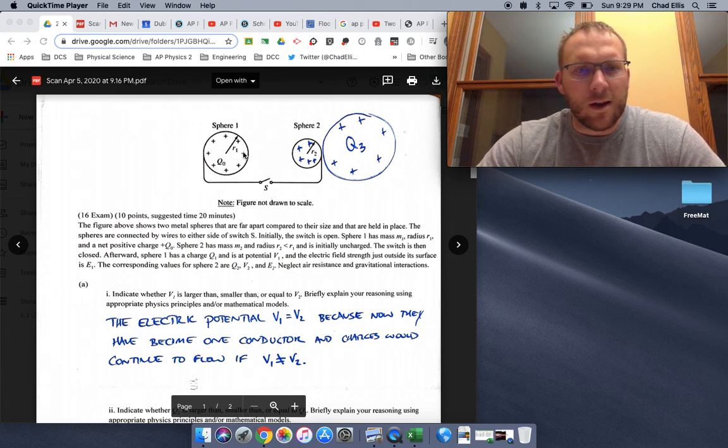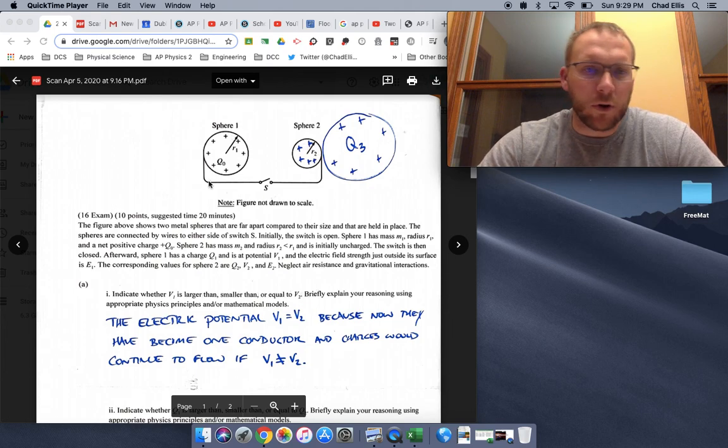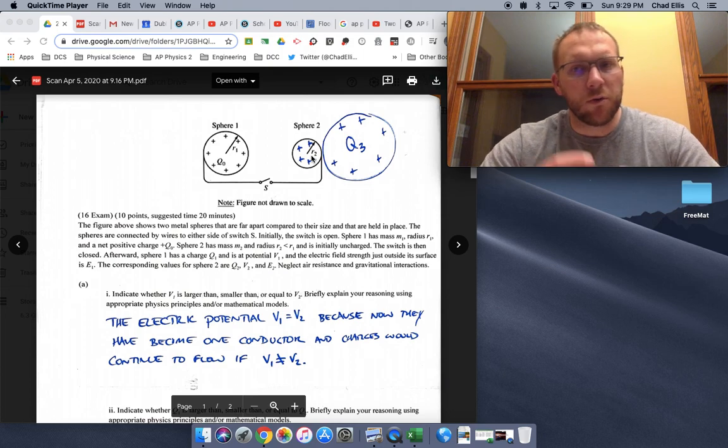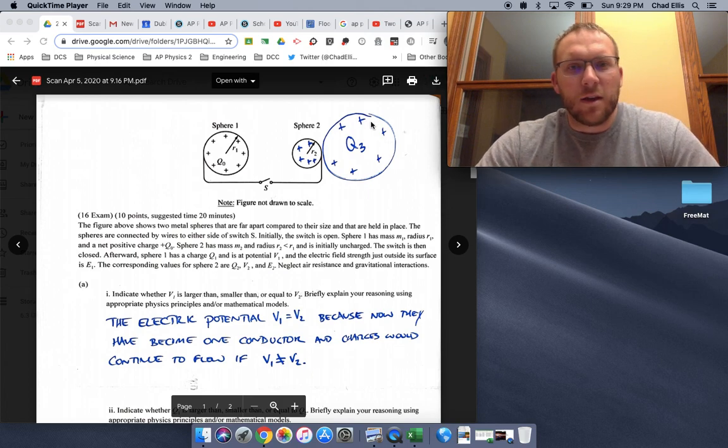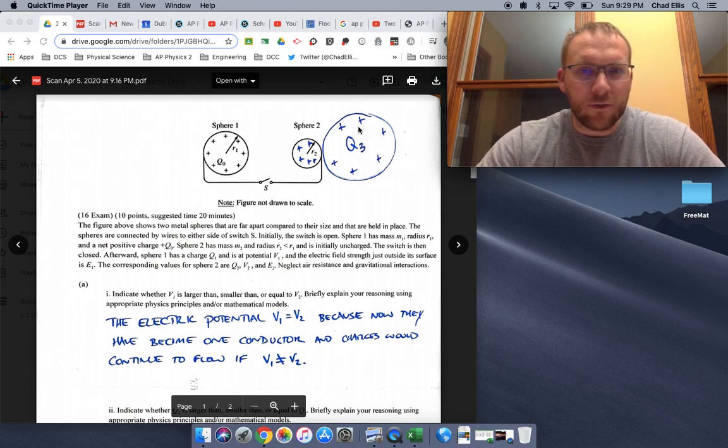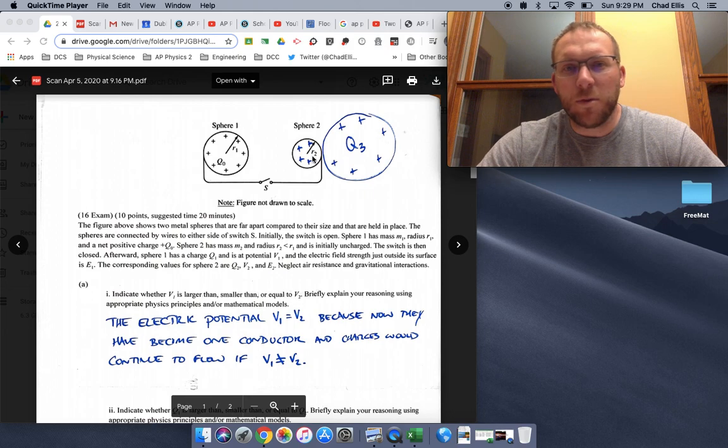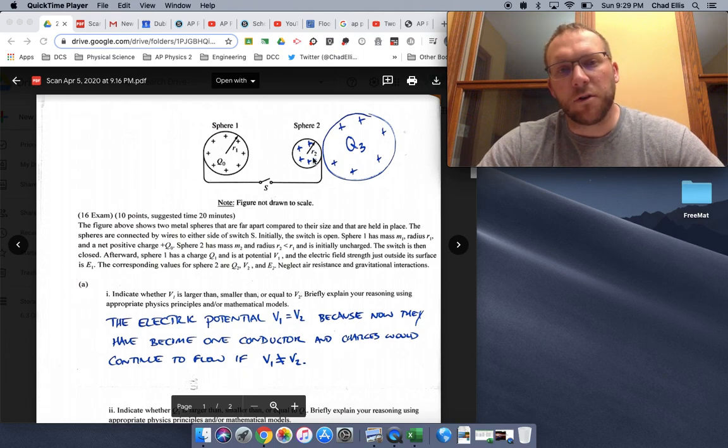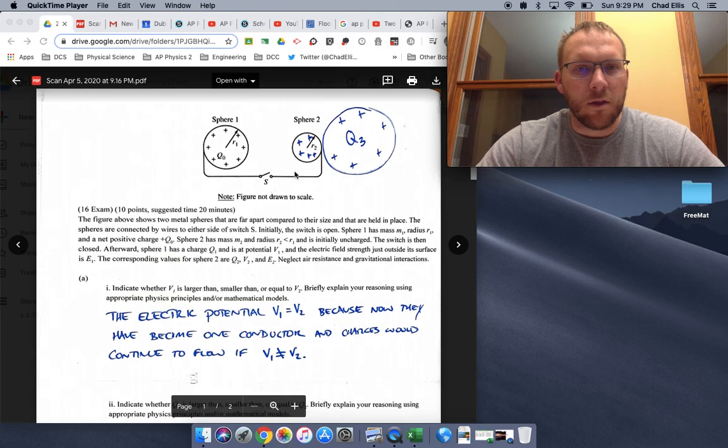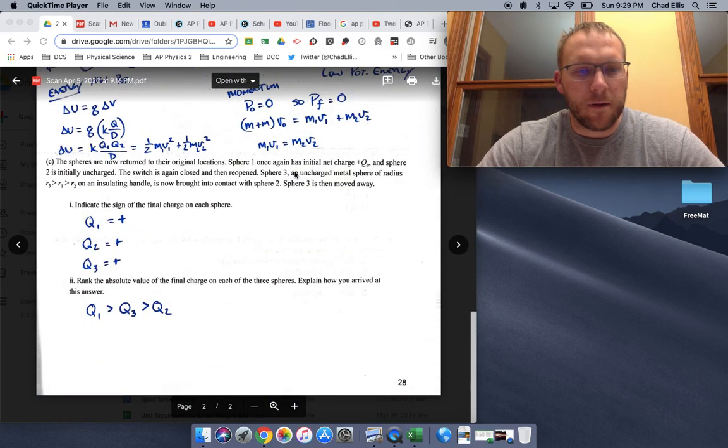Sphere one's going to lose some of its positive charge because electrons from sphere two are going over to it. So sphere two is also going to be positive, but then they're disconnected again. And so Q three, which is neutral, is going to come over. Some of its electrons are jumping over into Q two because Q two was positive already. And so we basically have the same process that sphere one did to sphere two, that sphere three does to sphere two. So to me, they're all positive in the end.